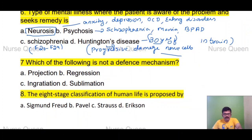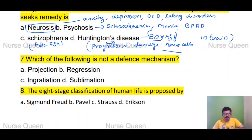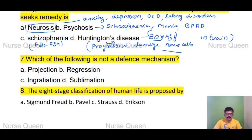Which of the following is not a defense mechanism? Options include regression, sublimation, and ingratiation. Ingratiation is not a defense mechanism.